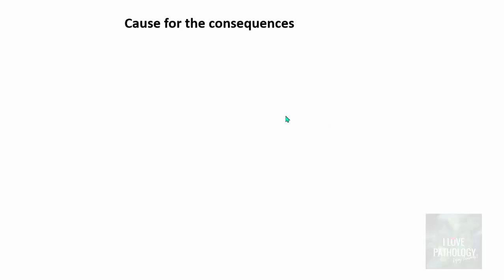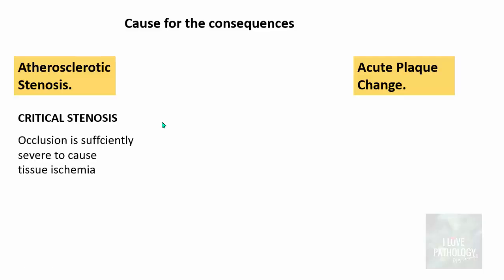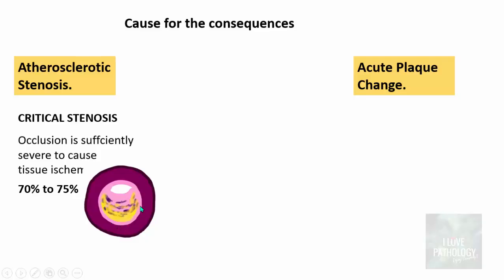The causes for these consequences — infarctions and other events — are most importantly atherosclerotic stenosis and acute plaque change. Atherosclerotic stenosis must be critical to cause tissue ischemia — critical stenosis is defined as 70 to 75 percent obstruction. This image shows a fibrocalcified plaque with calcified material causing critical stenosis, which severely compromises the nutrition of the supplied tissue. The second cause is acute plaque change, which can be because of rupture or fissure of the plaque.